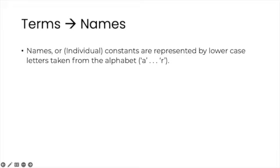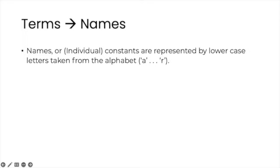Names, or individual constants, are represented by lowercase letters taken from the alphabet. In the system we are studying, we can use the letters from A to R. And if you need more names, you can add sub-indices to those letters.